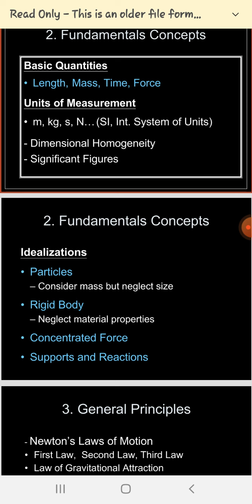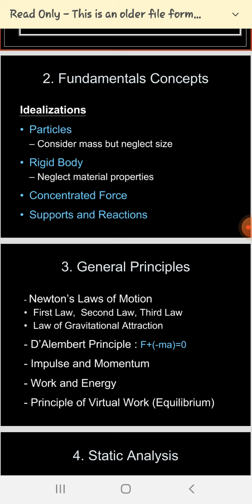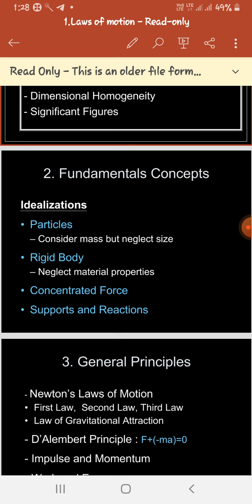Force is measured in Newtons, which is the SI unit of force. The second part covers what exactly a particle and a rigid body are. A particle is when we consider a mass but neglect the size or shape of the body — mass is important but size and shape are not. A rigid body is when we neglect the material properties of the body.